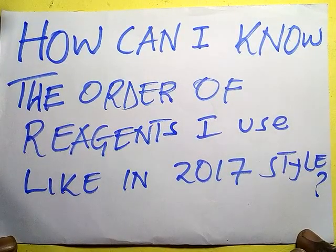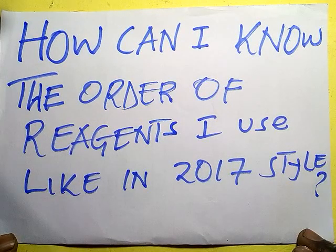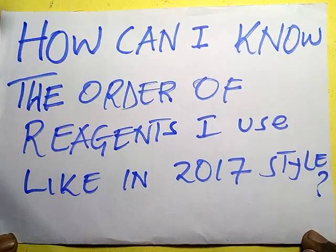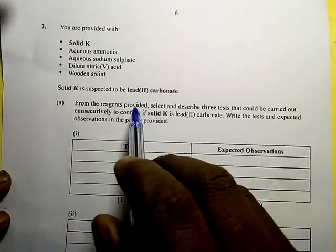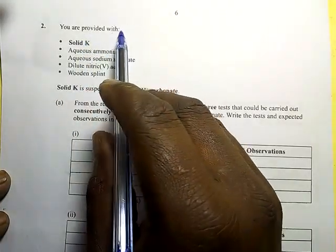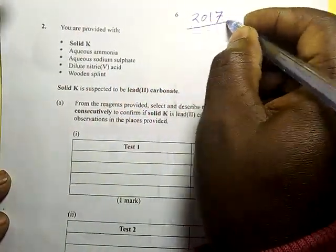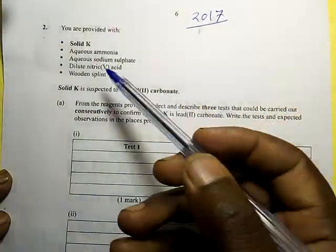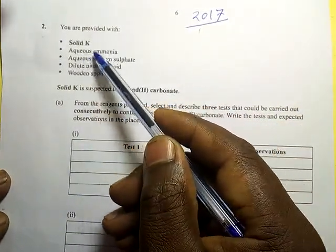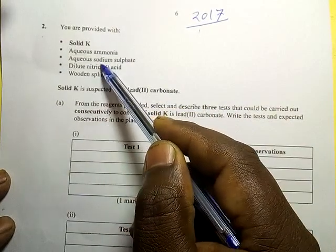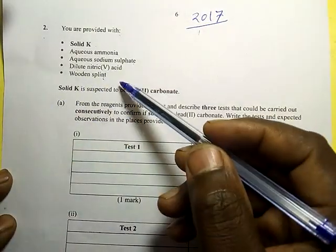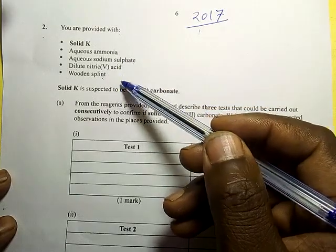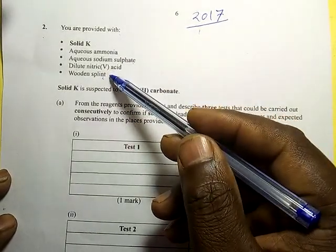Welcome. There is a question we want to answer: how can I know the order of reagents? This question came up in 2017. In that exam, Question 2, you were provided with solid lead carbonate, aqueous ammonia, aqueous sodium sulfate, dilute nitric acid, and a wooden splint. Someone is asking how to know which reagent comes first.